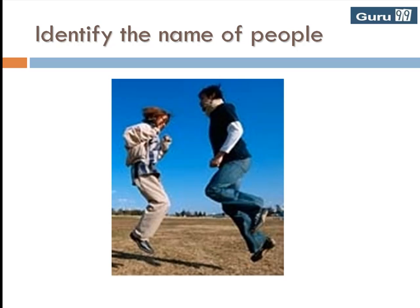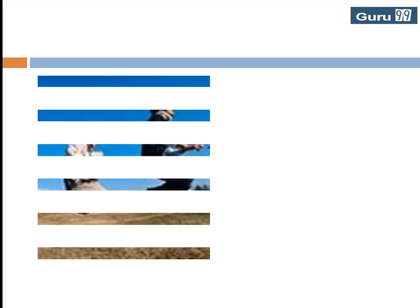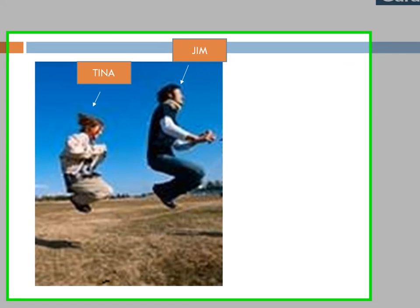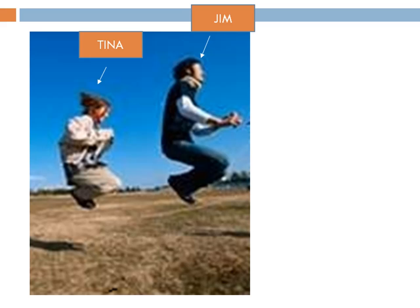I am sure most of you would have successfully identified the names of the people in the new picture. This is because when the first picture was shown, you classified the objects as human objects — it's not a picture of a bird. You obviously don't realize it since it's a very fast process for the human brain, but that's the way it works.